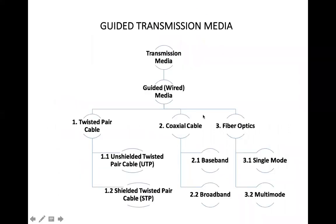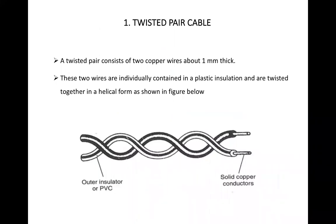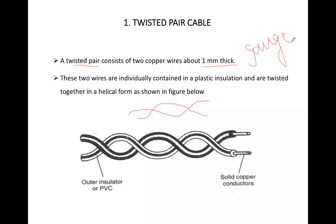The first type of guided media is twisted pair cable. In twisted pair cable, you have a pair of cables that are twisted together. It is a copper cable with a thickness of normally 1 mm. In the center is copper used as the conductor, and the copper is covered with an insulator. The insulator is used to avoid short circuit and to avoid external noise.